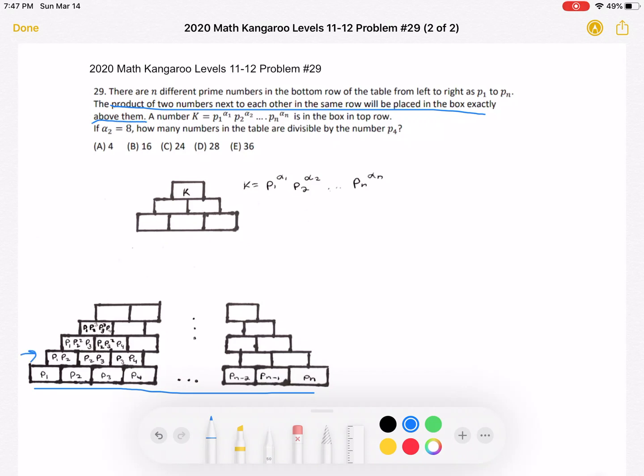So then we look at this row, and again, we multiply the two numbers beneath it. So for example, P1, P2, in order to get the number in the box above it, which is P1, P2. And again, this pattern continues.